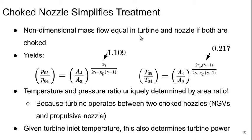If the nozzle is choked, it really makes life a lot simpler. In that case, the non-dimensional mass flow is equal in the turbine and the nozzle, and the second term in the equation becomes just 1. So the pressure ratio is purely a function of area ratio and efficiency, as is the temperature ratio. The pressure ratio P05 over P04 will be the area ratio to a power just a bit bigger than 1, and the temperature ratio is something close to 0.2 for these assumed values. So the temperature and pressure ratio are uniquely determined by the area ratio.